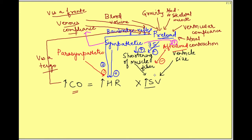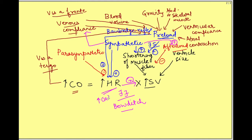There is also something known as the force-frequency relationship, also known as the Bowditch phenomenon: increase in heart rate causes increase in stroke volume. This happens because when heart rate is higher, with each cardiac impulse there is an increase in calcium inside the cardiac muscle, and since calcium is important for contraction, this increase in calcium leads to increase in stroke volume. These are the factors which affect the cardiac output.